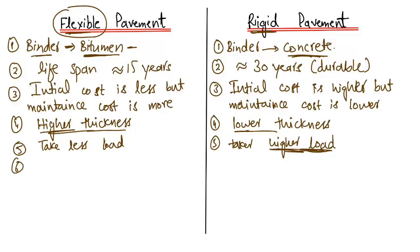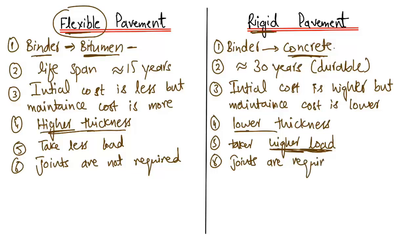The sixth difference is joints. No joints are required in flexible pavement. However, in rigid pavement, joints are required and are typically provided every 10 meters. These are expansion joints provided because concrete expands and contracts with thermal changes. Without these joints, the concrete pavement could develop cracks when the temperature changes.